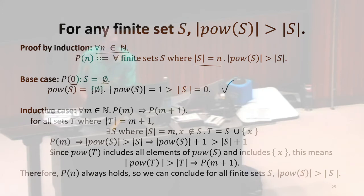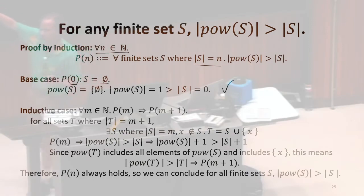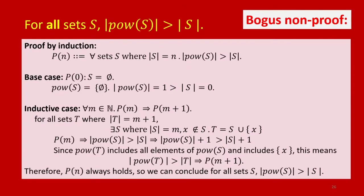The induction: we're going to assume that the property holds for the set of size M, and show that it holds for the set of size M plus one. That proof is valid for finite sets. The question I want you to think about is, why does this not work to prove that this property also holds for infinite sets?